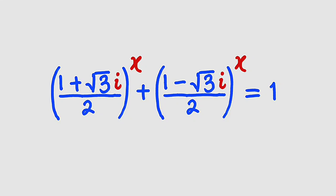Hello, good day viewers. In this tutorial, we are going to find a solution to this interesting complex equation. We would like to find the value or values of x that can satisfy the equation: (1 plus root 3i) divided by 2, all to the power of x, plus (1 minus root 3i) divided by 2, whole to the power of x, equal to 1. This question was posted by Garba Isha on our Facebook page. Alright, let's get started.